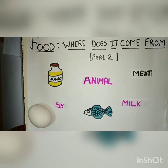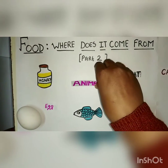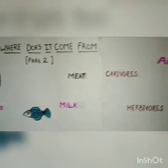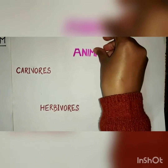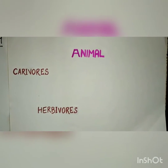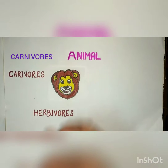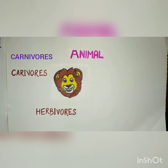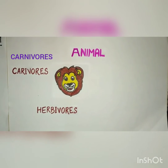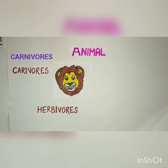Now let us understand about the different food habits which we see in animals. Carnivores are those animals who eat only the flesh of other animals, for example lion, cheetah, snake etc.